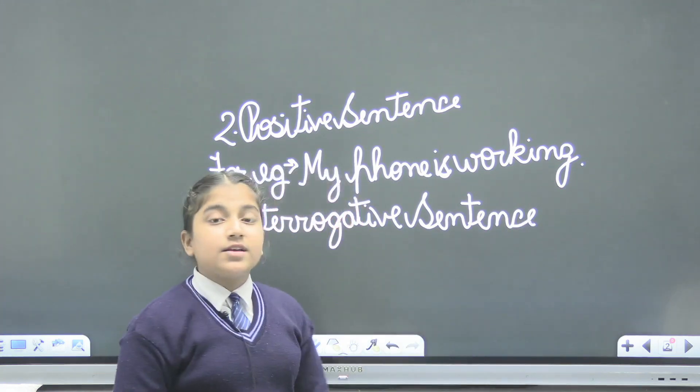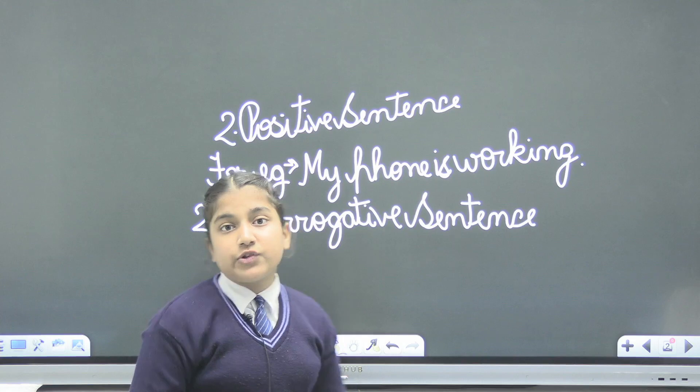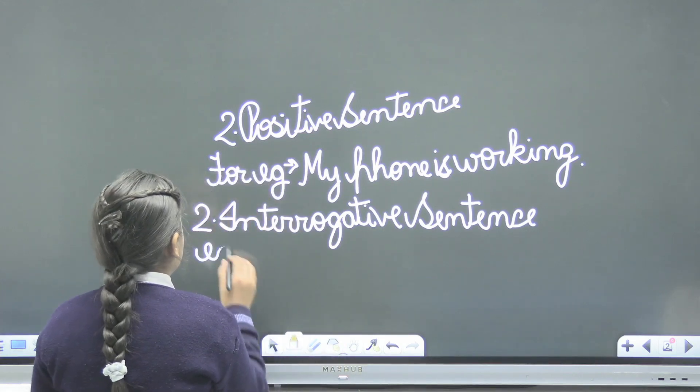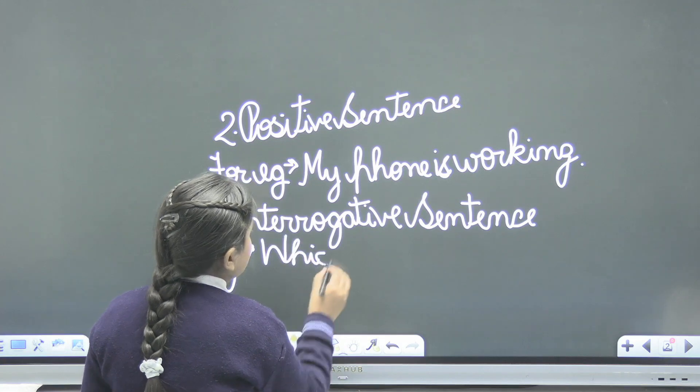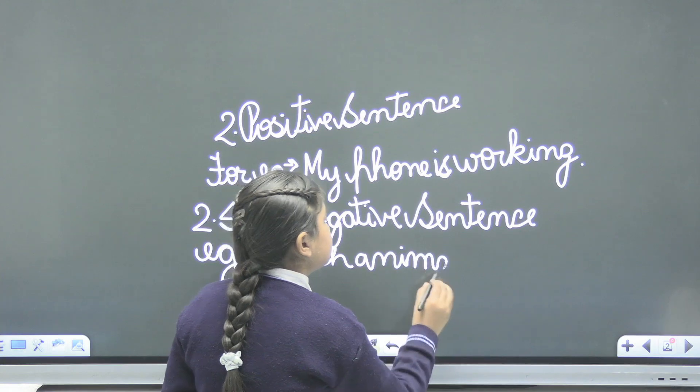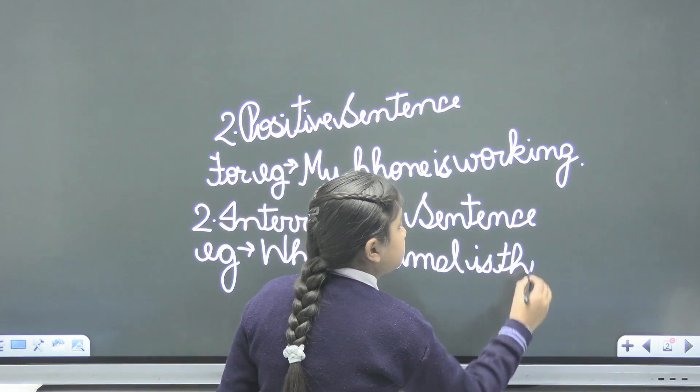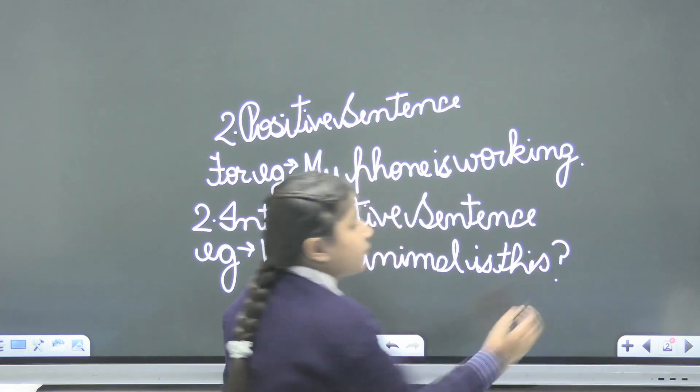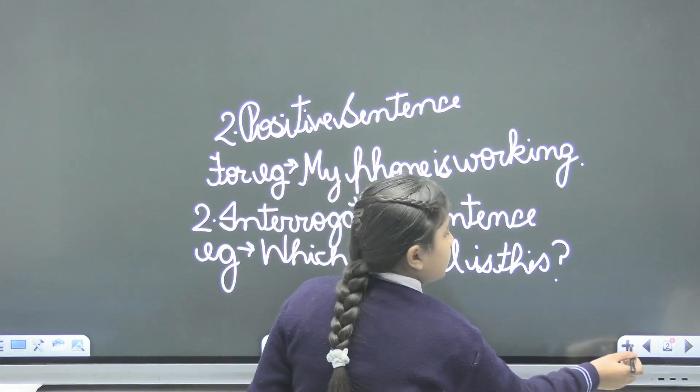The sentence in which questions are asked as a sentence, jis mein questions puchhe jate hai. For example, which animal is this? Do you want ice cream? What are you doing? And interrogative sentence ke bhi do type hoote hai.